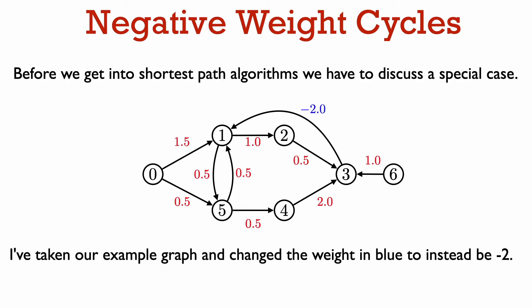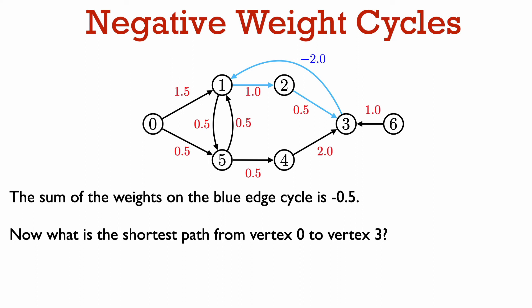Before we get into shortest path algorithms, there is one special case to discuss. I've taken our example graph and changed the weight of the edge from vertex 3 to vertex 1 to be negative 2. Usually we think of edge weights as representing positive quantities like distance, time, or money, but graphs with negative weights can have interesting applications too. This graph now has a cycle, shown in blue, where the sum of the edge weights along the cycle is negative — specifically negative 0.5. We call this a negative weight cycle.